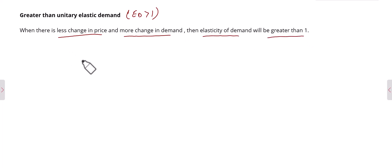For example, percentage change in price is 10% and percentage change in quantity demand is 20%. So there is less change in price - price is changing by 10% and as a result demand is changing by 20%. So there is less change in price and more change in demand.